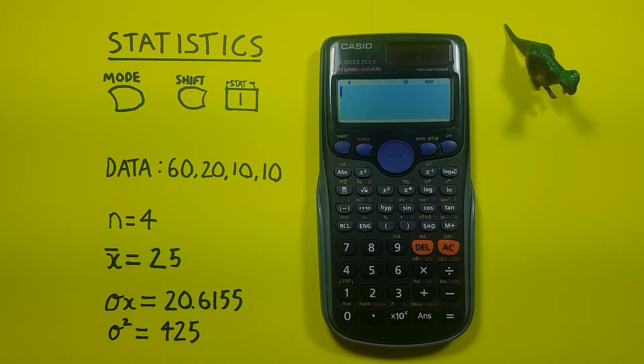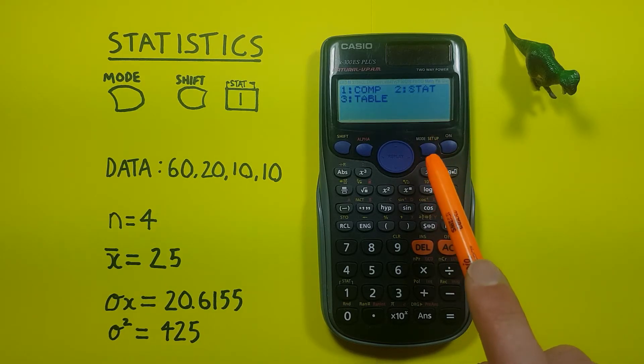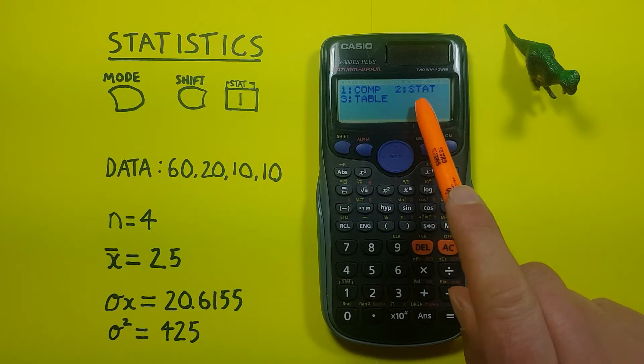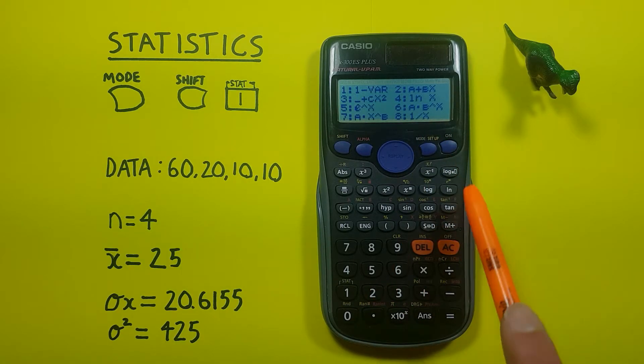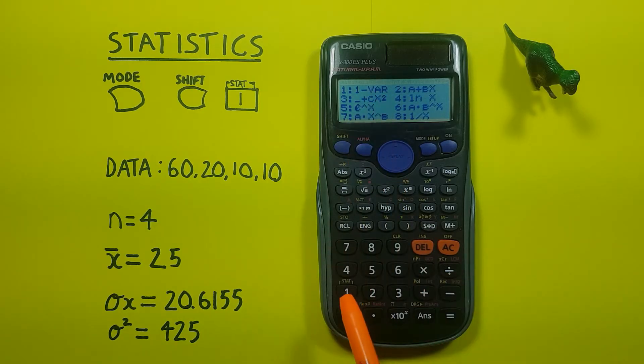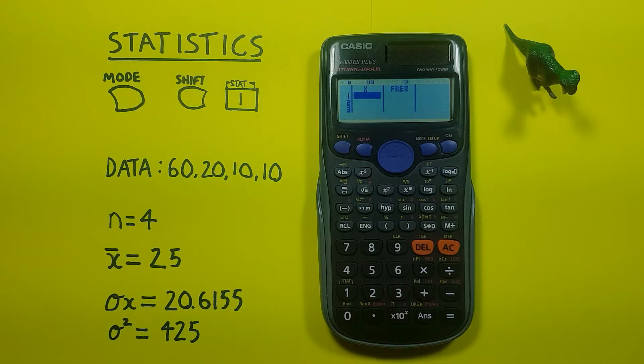The first thing we want to do is turn our calculator into stats mode. To do that, we press the mode key so that we get to this menu, and then we want to press 2 for stat. That'll bring us to this complicated looking menu, but we only want one variable or basic statistics, so we just press 1.